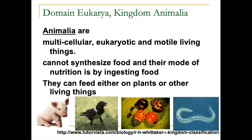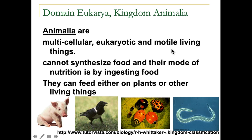Now, why are animals different from plants, bacteria, and protozoa? Animals are multicellular organisms — their bodies are composed of many cells, and every cell is eukaryotic, meaning they have a nucleus and membrane-bound organelles. Most animals can also move, which is a clear characteristic distinguishing them from plants, which are largely non-motile.